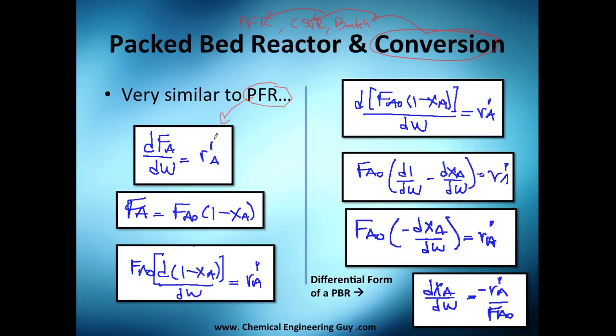So the only thing that changes is, of course, this rate of reaction is based on the mass of the catalyst, and this differential is not volume but mass of catalyst. But we're still working with flow of A. Now, flow of A at any moment is the initial amount of flow of A times the difference in conversion, so let's plug this number here, which essentially is this here.